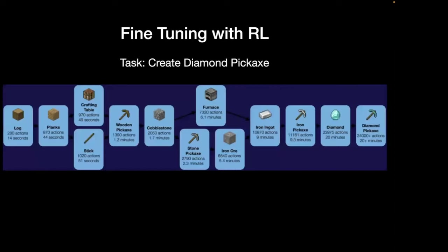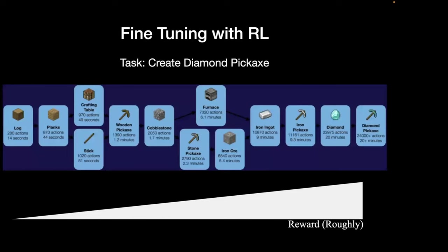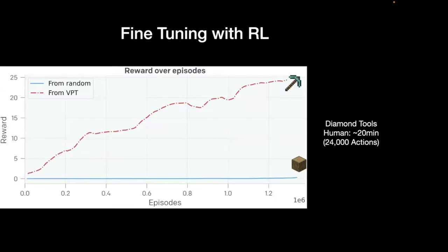We gave it the task of learning all the steps en route to producing diamond tools — a very difficult task that takes skilled humans about 24,000 actions in a row and over 20 minutes. Without pre-training, you can't learn any of these tasks. With the VPT pre-trained agent, you can systematically learn each task in succession and eventually get very good at obtaining diamond tools. I'm very impressed with this agent and excited about what that might mean for open-ended learning algorithms.